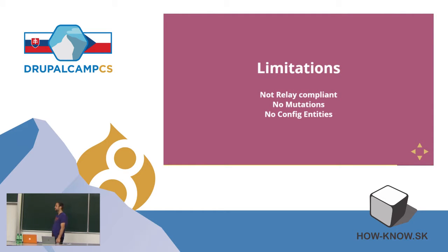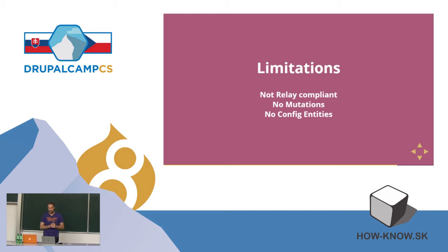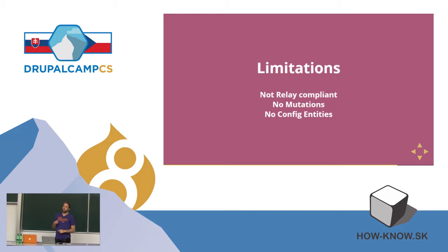As we said, there are still some limitations. Facebook also published React and another JavaScript library called Relay, which allows you to consume GraphQL queries on the client side. Relay has some expectations towards your GraphQL schema — it's like a dialect on top of the GraphQL language and your server has to speak that dialect to be fully supported. We don't support that yet, so we don't have Relay compliancy. If you want to use React with Relay, you can't yet. We also don't have write operations yet. And we don't have config entities — so if you want to render the human-readable name of a node type, you can't yet because node types are configurable entities.